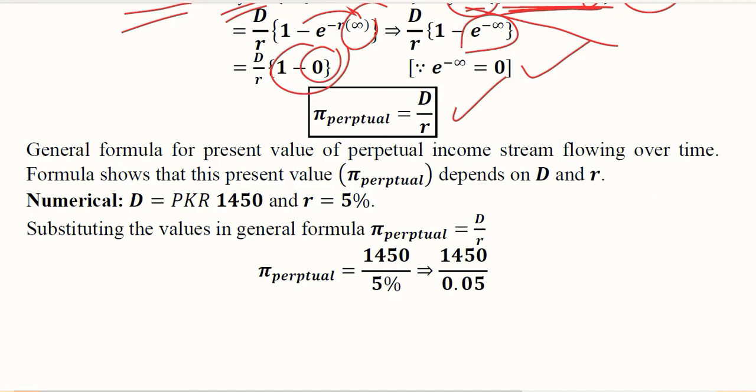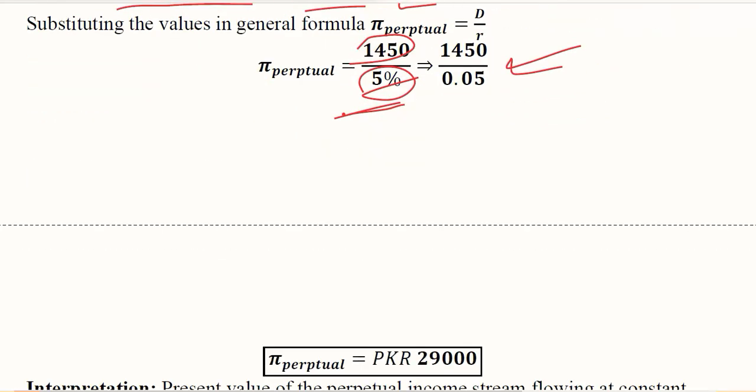These are the various components, D and r, on which the value of the perpetual flow depends. If we are given numerical values of 1450 and discount rate of 5%, we can substitute these values. We have substituted the values of D and r and now we can simplify it to get the final result.